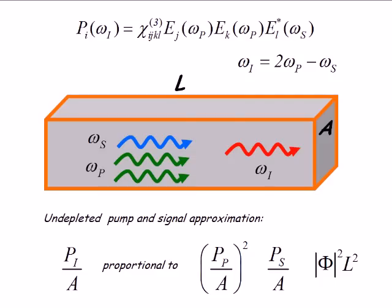I have one signal field. When I square the field to get the power at the idler, I'll get a power in the signal. So I expect this to be proportional to these quantities.